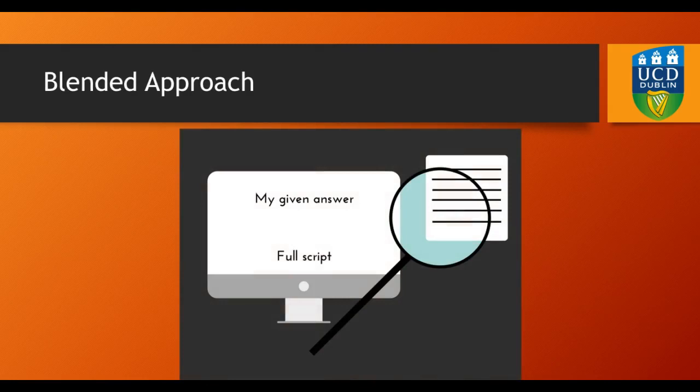I use this in a blended approach in my classroom. The students work on this reusable learning object online, then compare their given answers to the full script and make a note of their errors. They then correct those errors and use the rubric that will be used ultimately in the summative assessment for the transcription exercise to grade their formative assessment. This grade doesn't count for anything, but it gives them a sense of what they need to do to improve.